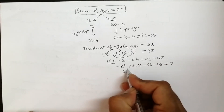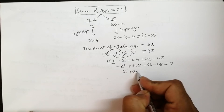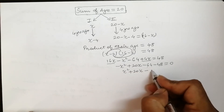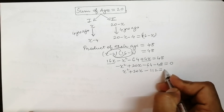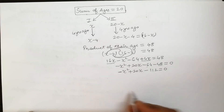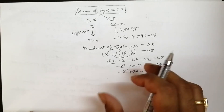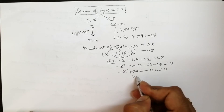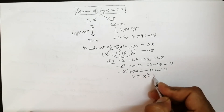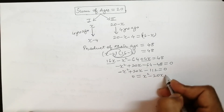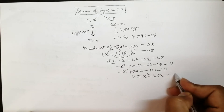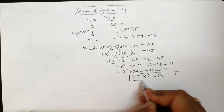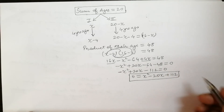तो अभी हम लोग इसको arrange करेंगे: minus x square, plus 20x (क्योंकि 16x और 4x मिलकर 20x होते हैं), minus 64, minus 48, which is equal to 0. तो ये minus x square को plus x square करने के लिए सारे terms हम RHS में shift करेंगे — तो ये हो जाएगा x square minus 20x plus 112, which is equal to 0. यही आपका quadratic equation है।